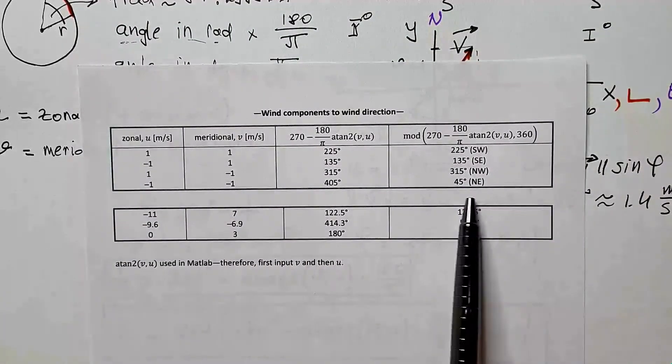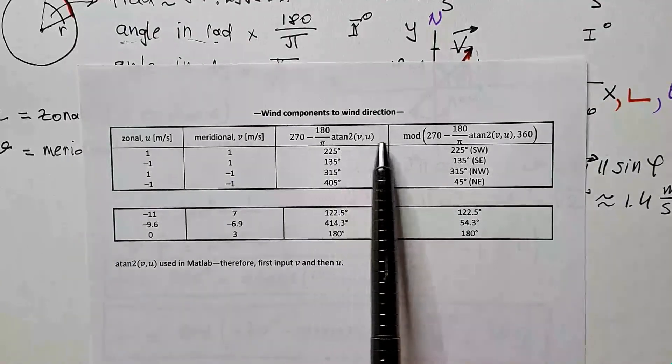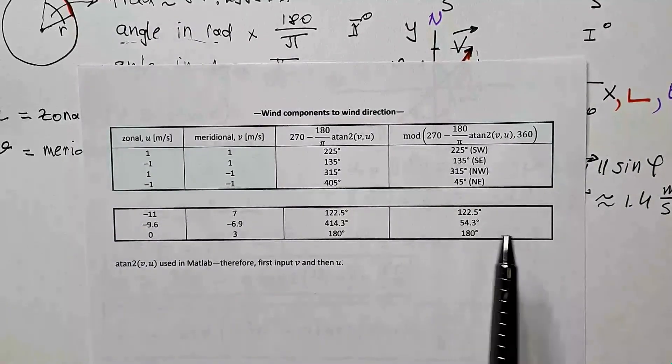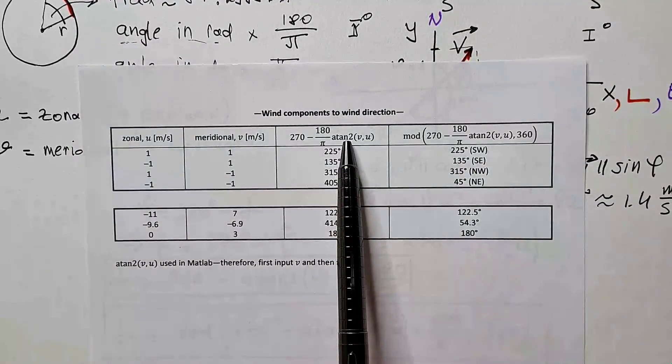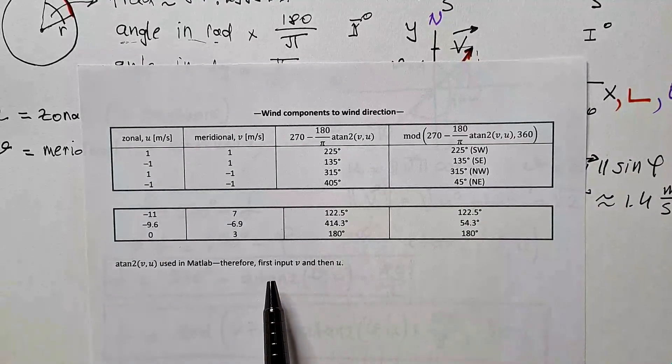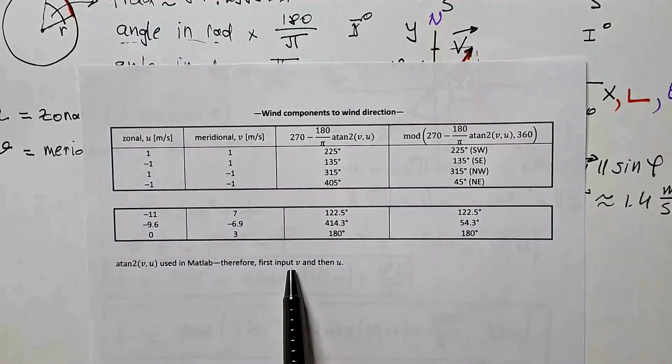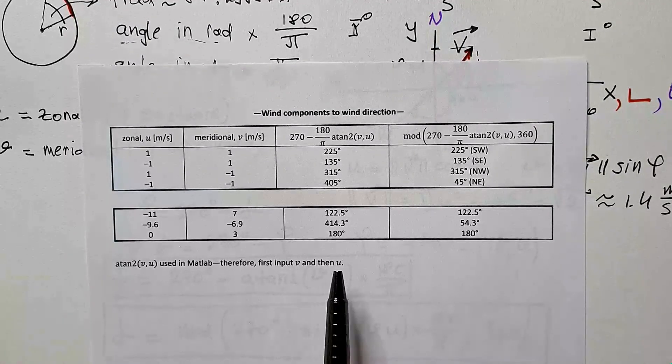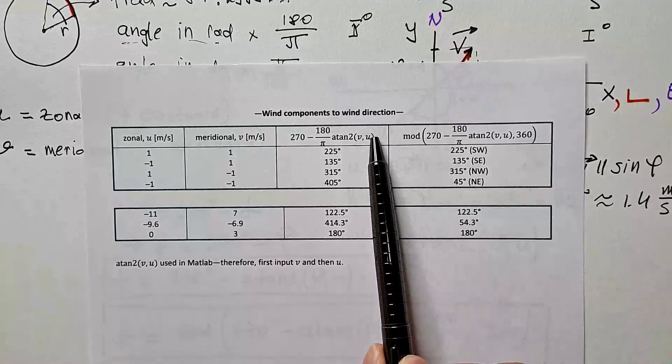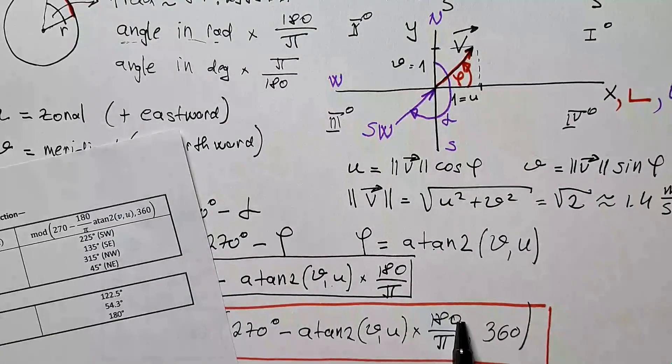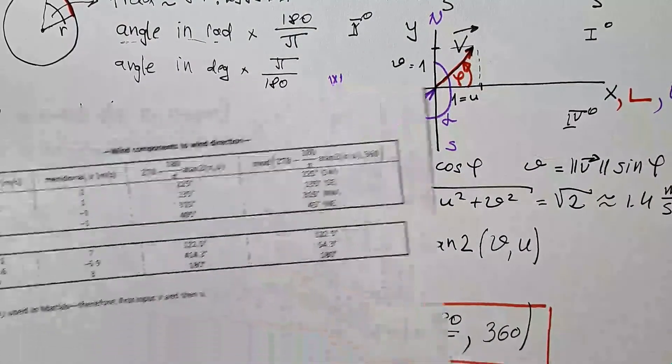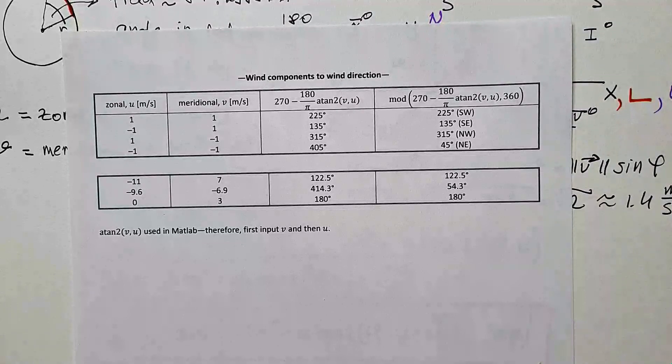Also, I carried out these calculations in MATLAB, so when you are using arctangent 2 in MATLAB, you have to first input V and then U. And I omitted here this conversion, 180 divided by pi, for simplicity.